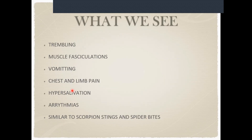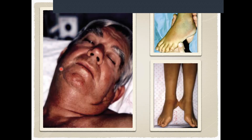When mamba bite patients come in you'll see trembling, muscle fasciculations, vomiting, chest and limb pain, hypersalivation, and arrhythmias — similar to scorpion and spider bites. You'll generally get a history that it was a snake bite. If you see arrhythmias and paresthesia without much swelling, start thinking neurotoxic — with cytotoxic there would be significant swelling and cell breakdown. Images show ptosis and loss of muscle tone; the bite marks are minimal and very difficult to see.